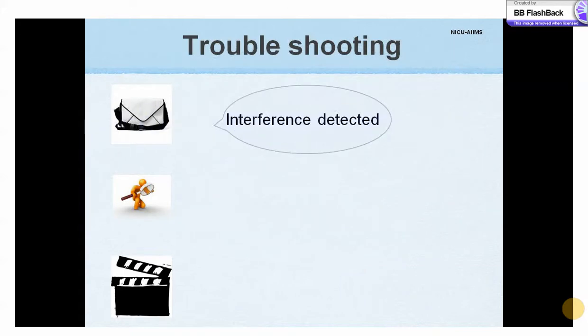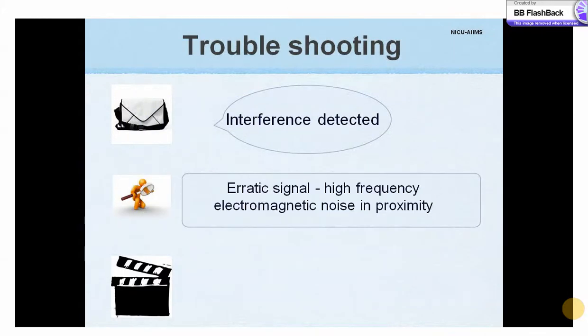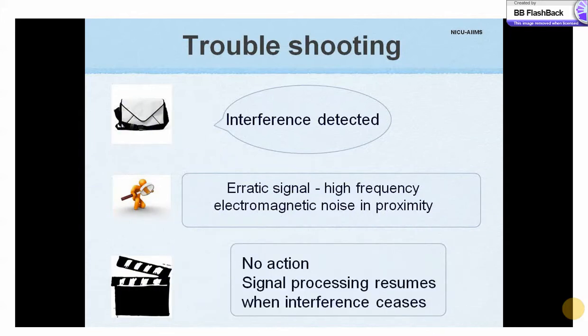If interference is detected, it means the signal is too erratic to be processed due to proximity of other electrical equipment generating high frequency electromagnetic waves. Generally, no action is required as the readings either do not change or become dashes if the interference persists. Signal processing resumes when the interference ceases.